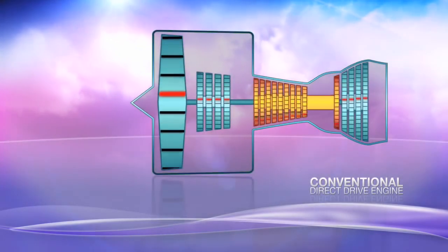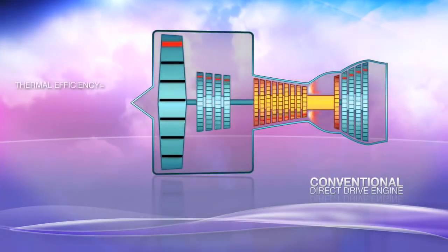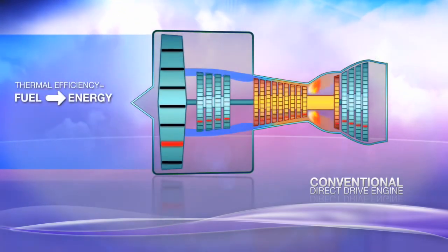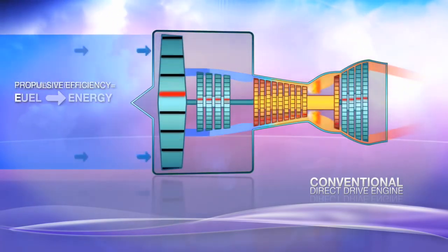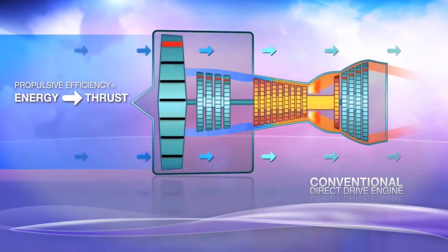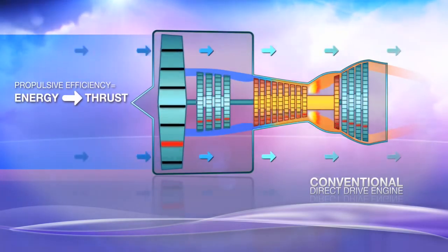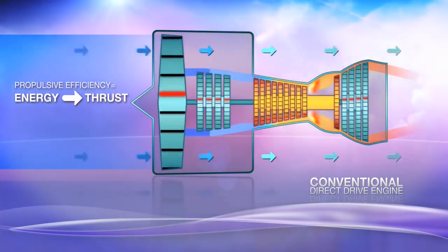A conventional jet engine burns fuel in the combustor to provide energy to drive its turbine and run the fan. The fan creates bypass air running around the engine core, which delivers most of the thrust for commercial aircraft.